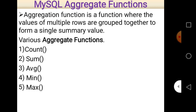First of all, what is an aggregate function? An aggregate function is a function where the values of multiple rows are grouped together to form a single summary value. That is why they are called aggregate — because they aggregate or sum all the values into a single one.